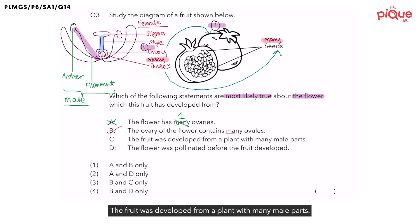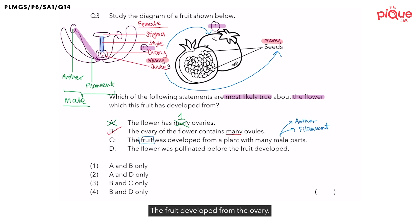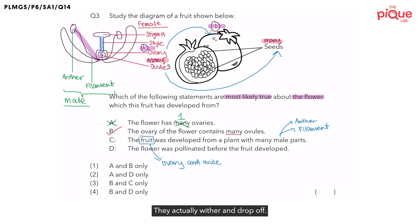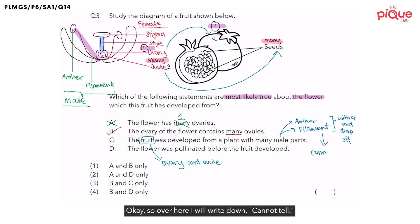Moving on to Statement C: The fruit was developed from a plant with many male parts. Do you remember what are the names of the male parts of the flower? They are the anther and the filament. The fruit developed from the ovary, and the seeds developed from the ovules. Once the fruit starts developing, the other reproductive parts — including the anther and filament — wither and drop off. So when we look at the fruit, we are not able to see or count how many anthers and filaments there were. We cannot tell. Therefore, we cannot give Statement C a tick.